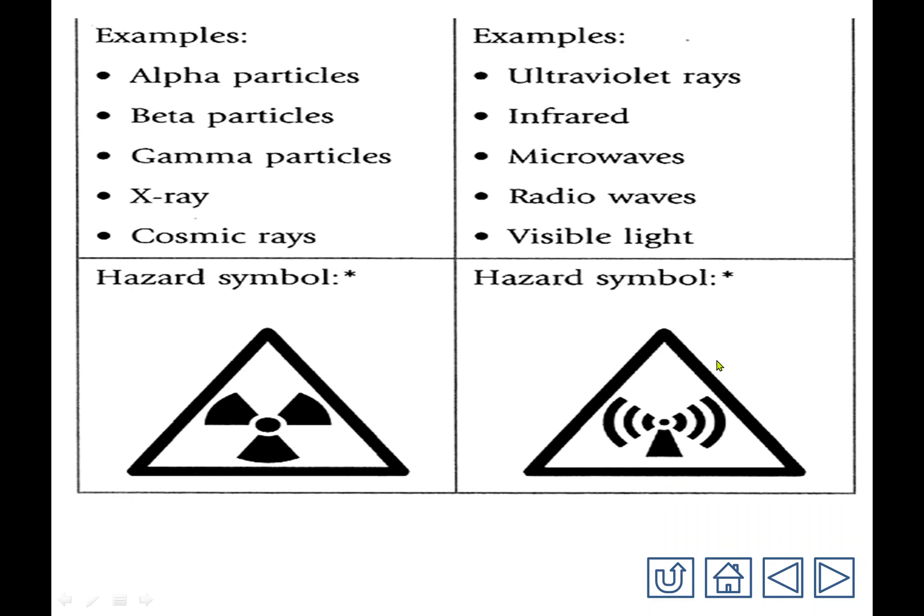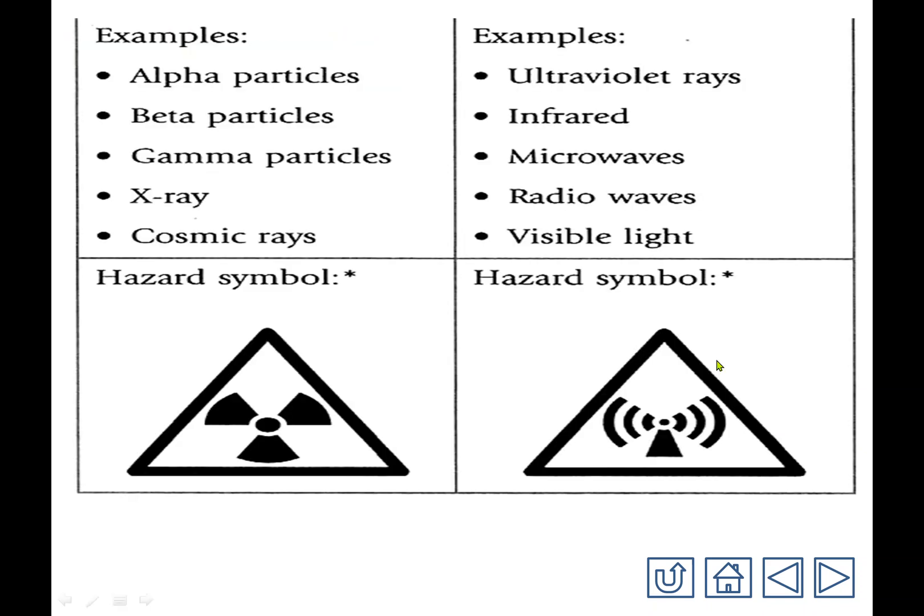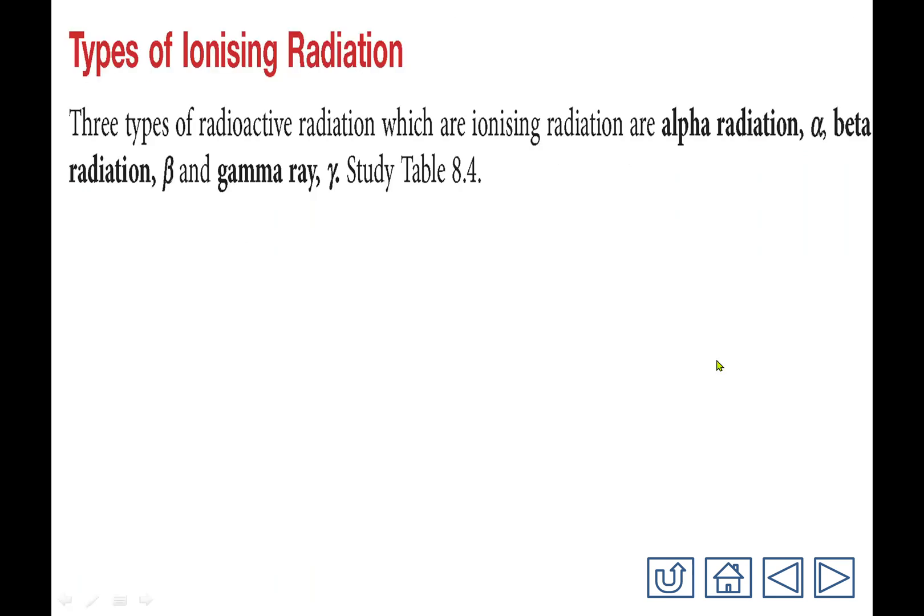This is ionizing radiation and non-ionizing radiation. One is dangerous, one is not dangerous. One needs caution, one you don't need to worry about too much. So next, we're going to talk about three different types of ionizing radiation: alpha, beta, gamma. See you in the next video. Bye-bye.